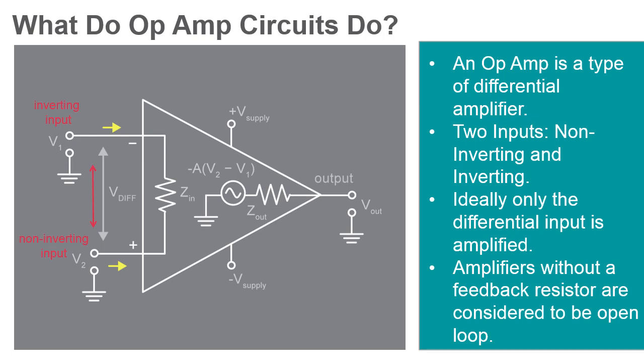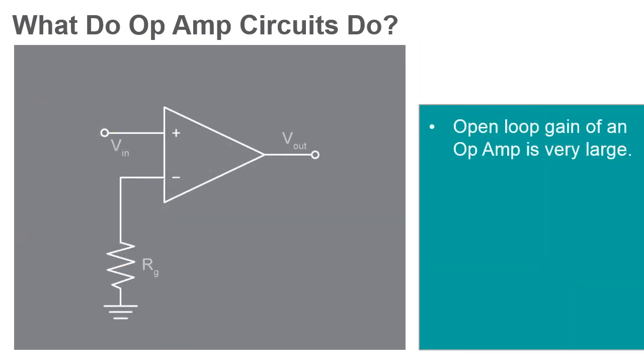Open loop refers to the absence of a feedback loop from the output to the input. This feedback loop is typically achieved with a resistor. The open loop gain of an op amp is typically very large, usually a factor of 100,000 or more for integrated circuit op amps.